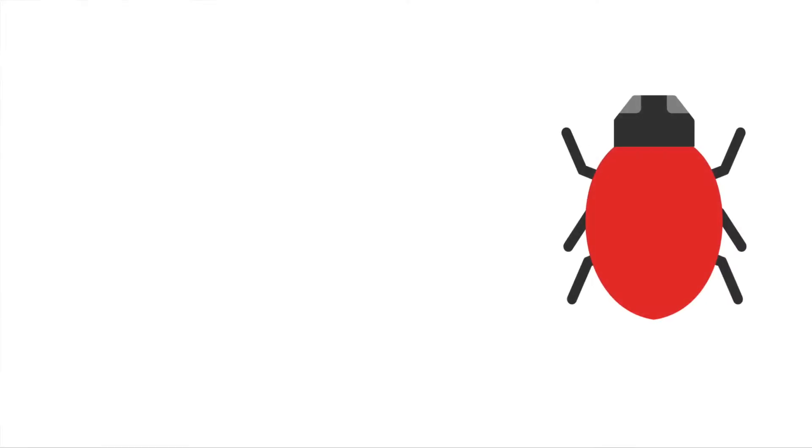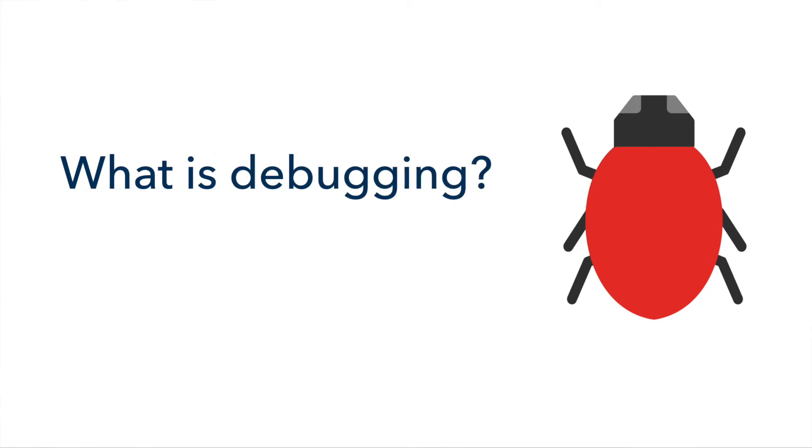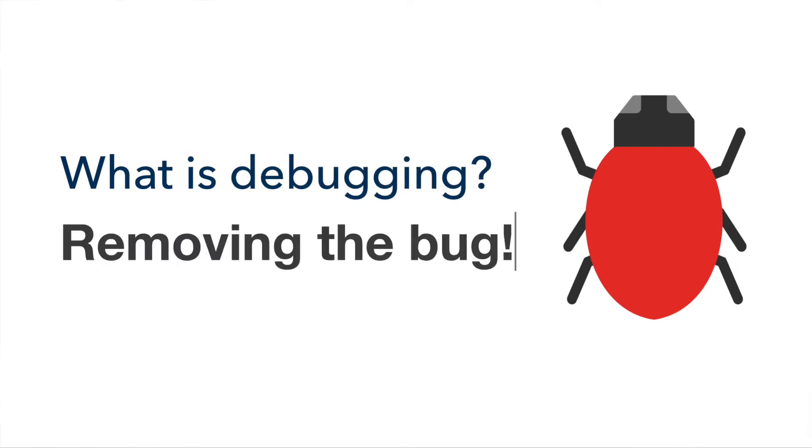Today I'm going to talk about a technique — four simple steps for debugging your code really fast. But first, what is debugging? In simple words it's removing the bug from your code. For that you first need to know where the bug is. If you can do that really fast, 50% of your problem is solved.